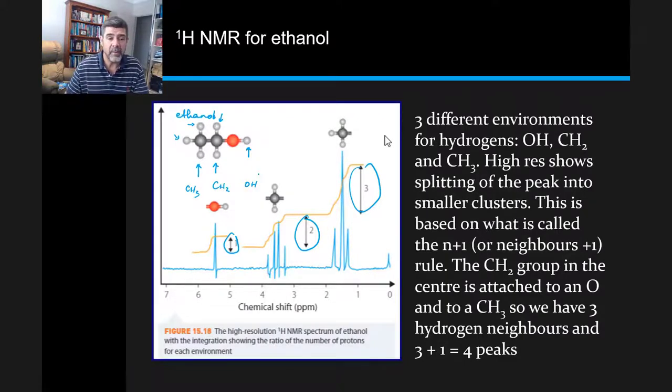When we do that, we're looking for the high-resolution peaks. The high-resolution peaks show splitting into smaller clusters, and this is based on the n plus one or neighbors plus one rule.